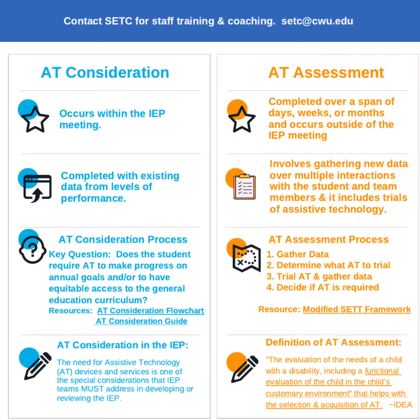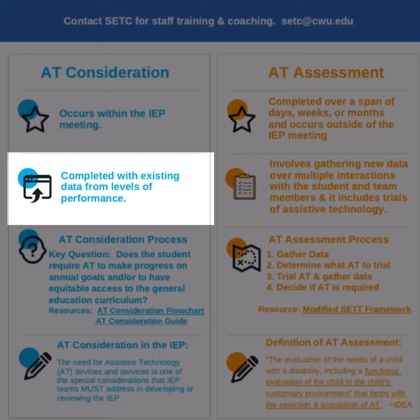The AT consideration discussion involves data that the IEP team has from levels of performance. The team may have tried some technology leading up to the IEP and has some information about if it was effective or not. This informs the discussion.